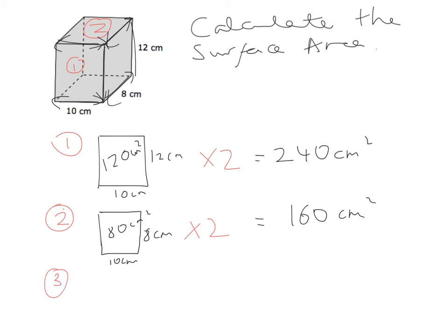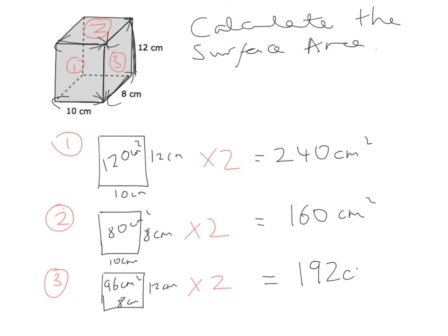And then rectangle number 3 is the one on the right-hand side and the left. The length along the bottom is 8 centimetres and the height going up is 12 centimetres. So 8 multiplied by 12 gives 96 centimetres squared — multiplied by 2 gives 192 centimetres squared.